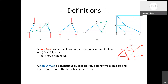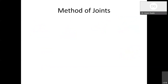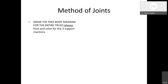With these basic definitions, let's go to some calculations. We want to calculate forces in all the members of a complicated truss — a bridge truss, roof, or stadium, whatever design. There are a couple of methods, and in this class we will look at the method of joints. First, draw the free body diagram for the entire truss and solve for the three support reactions (for a 2D case).